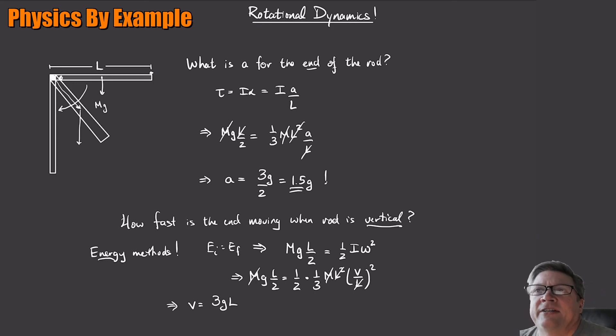Did I forget any factors? No, that's going to be it. So the speed of the object, the speed of the end of the bar is just going to be square root of 3GL. Very cool.